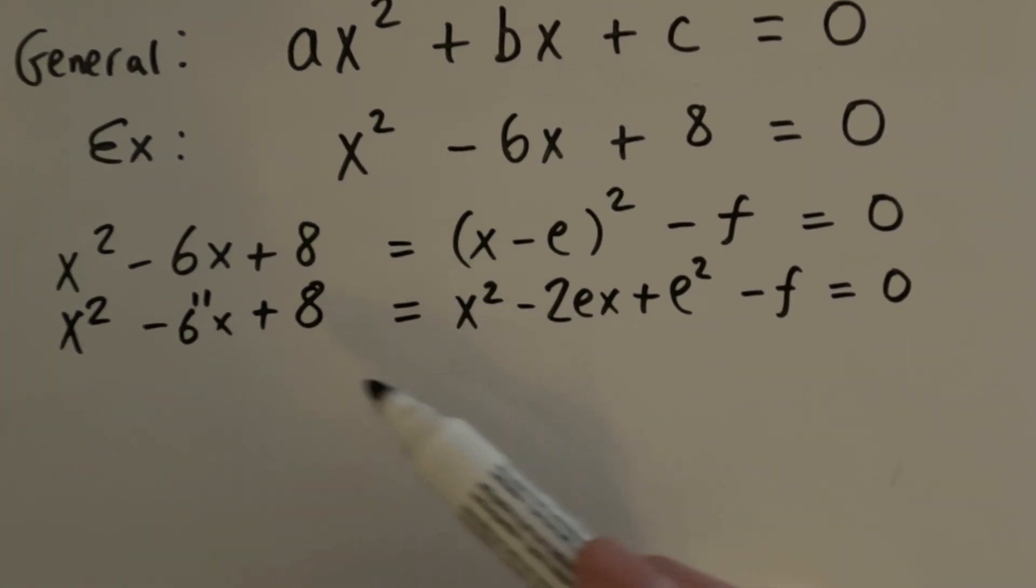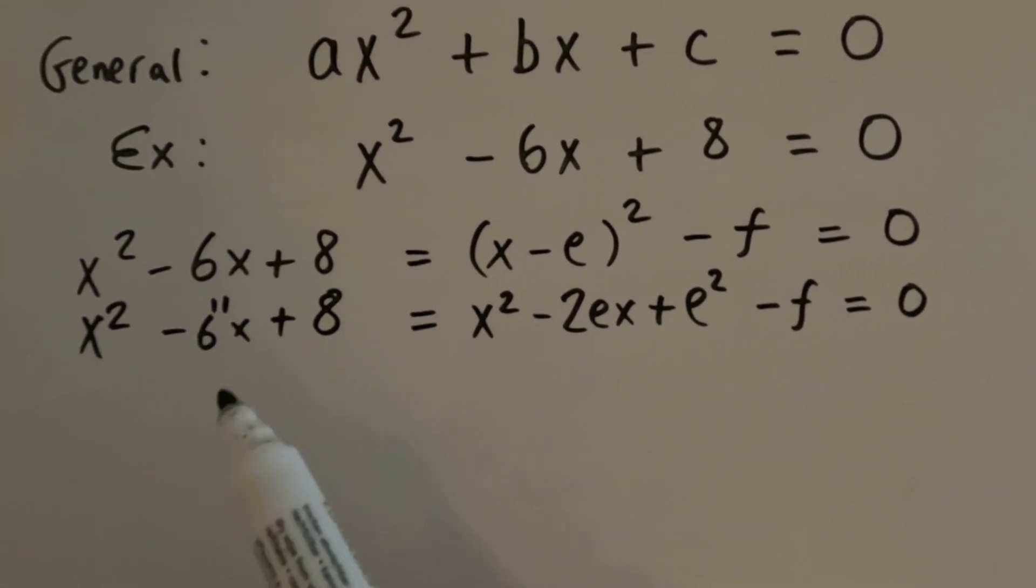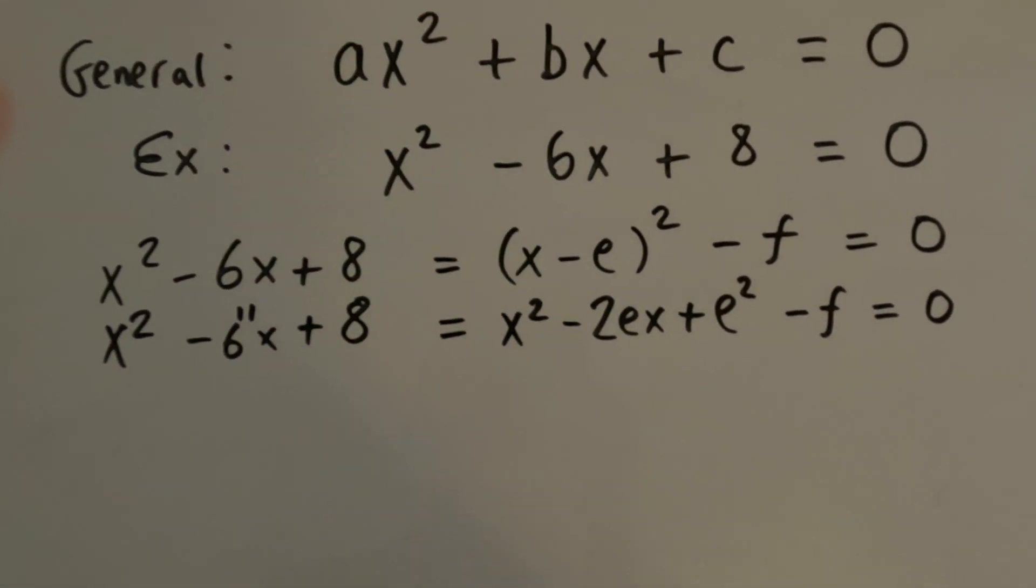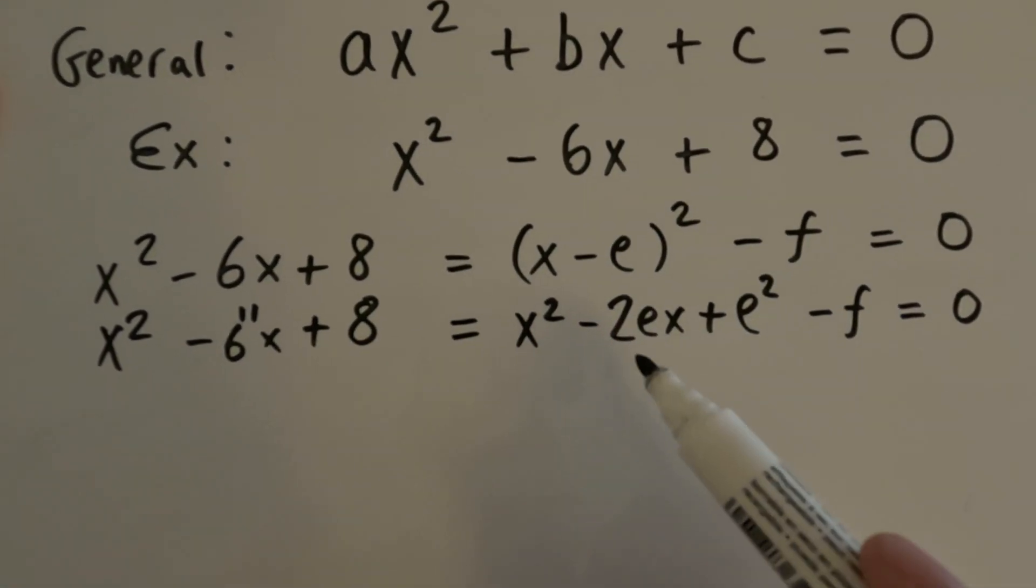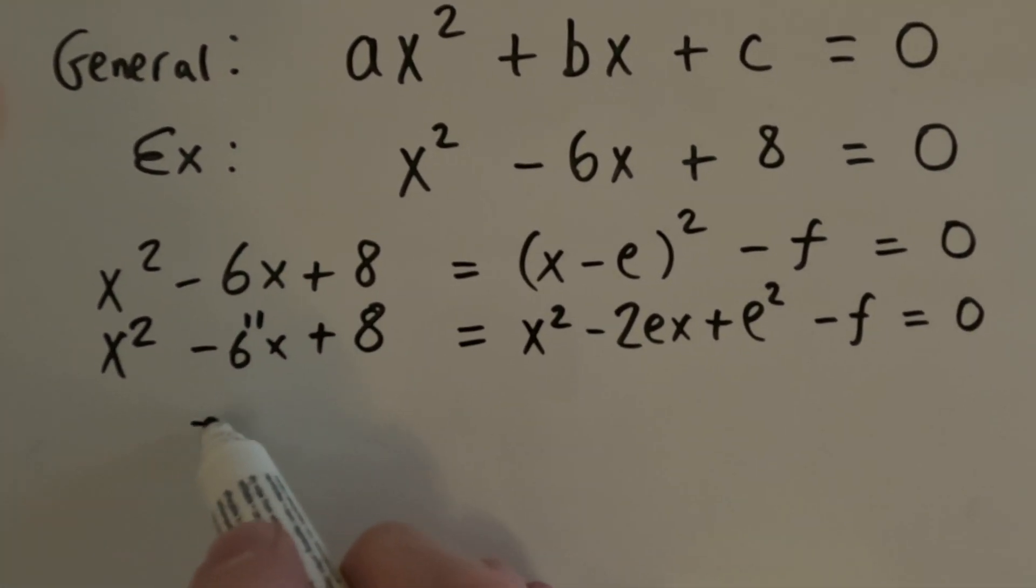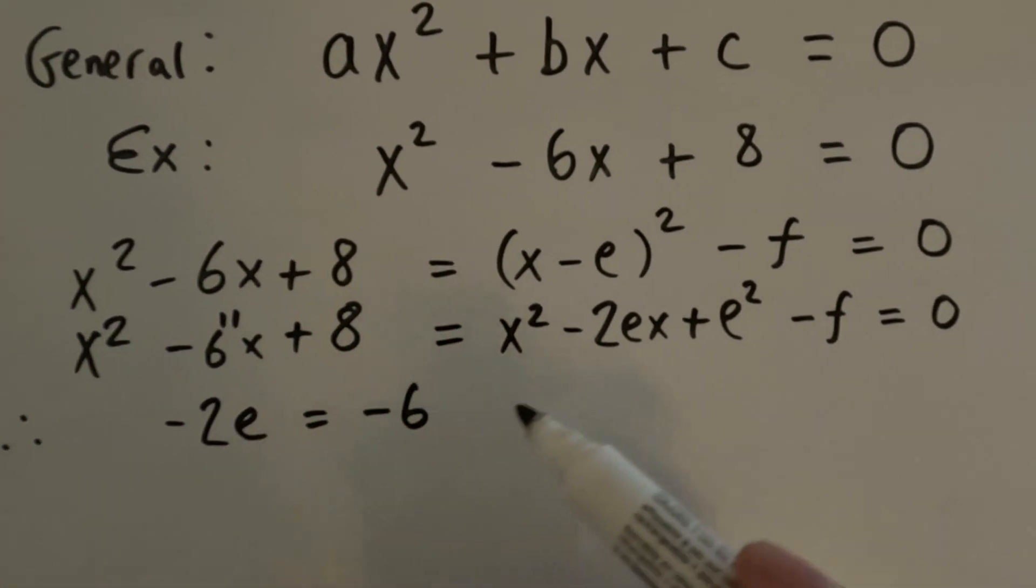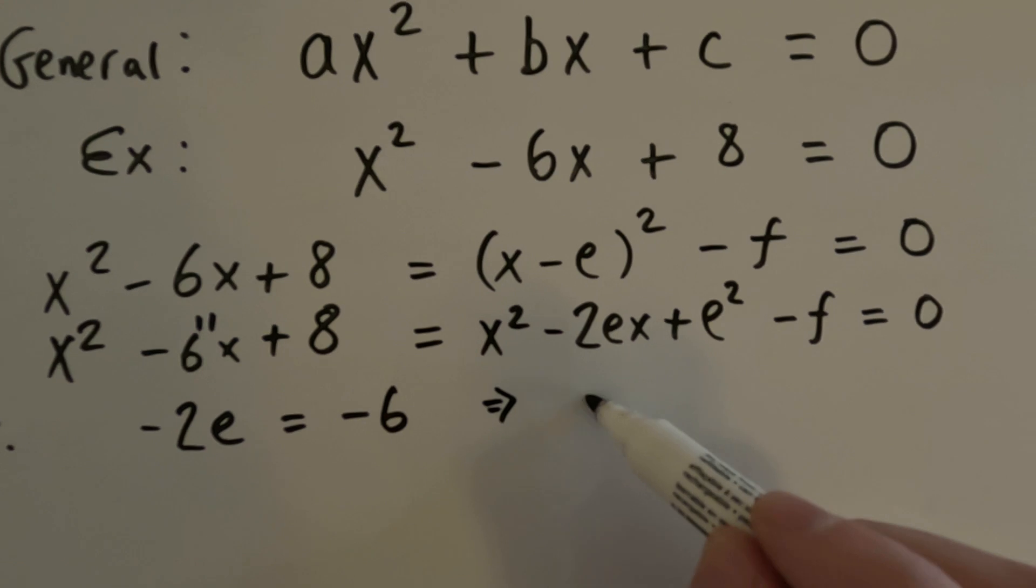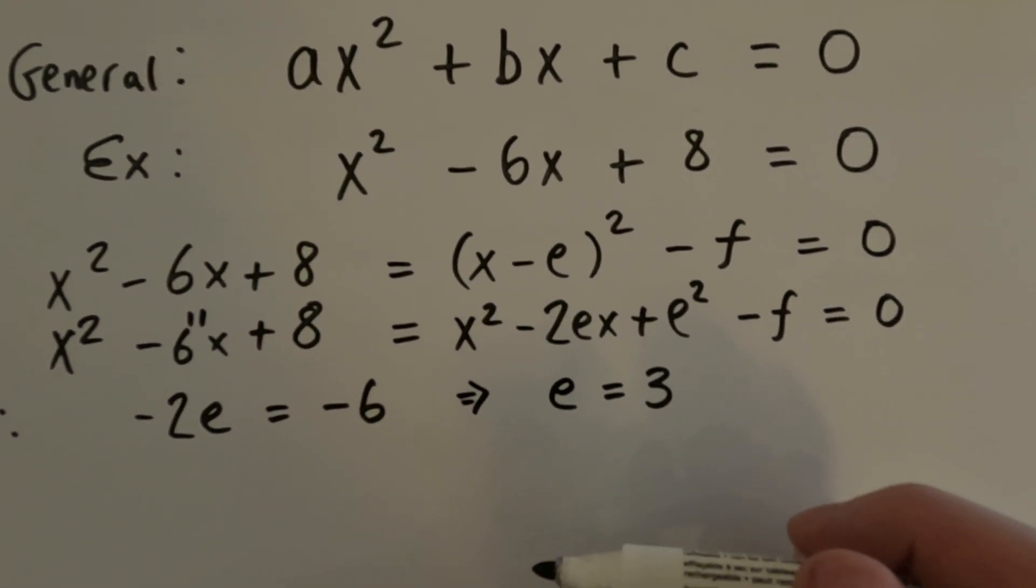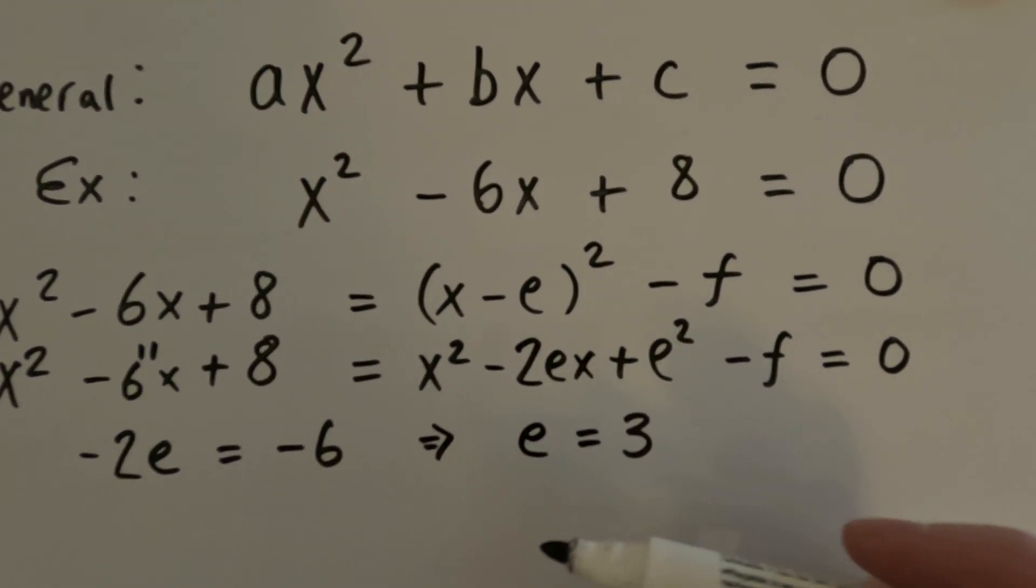Right. So what we're going to do now is, so this left-hand side is equal to this right-hand side. So now we're going to compare coefficients. So comparing coefficients, what do we get? We get that, so the coefficient of x is minus 2e, and over here it's minus 6. So minus 2e equals minus 6. So that implies e equals 3. There you go. We found e. So that wasn't very difficult, was it? We found e. So now all we need is f.